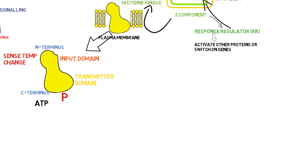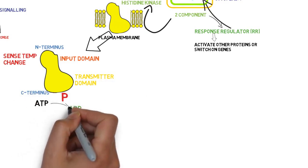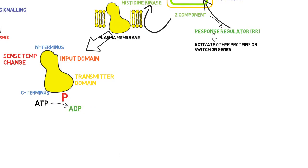This transmitter domain is phosphorylated by hydrolyzing ATP when the bacteria sense high temperature conditions.